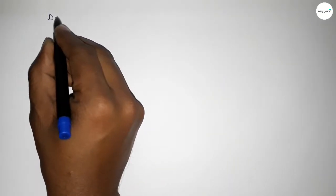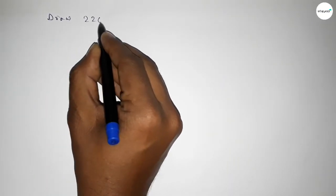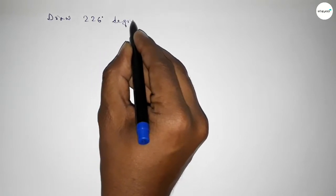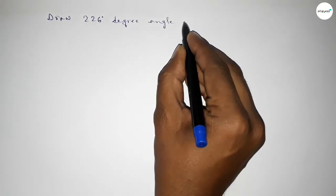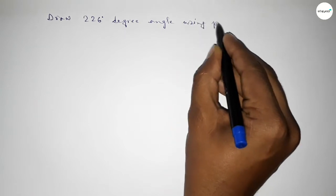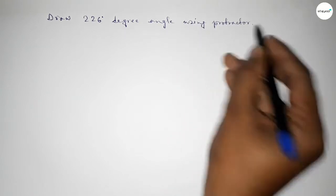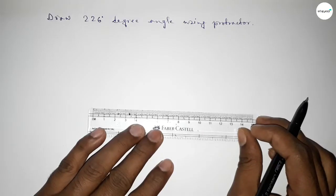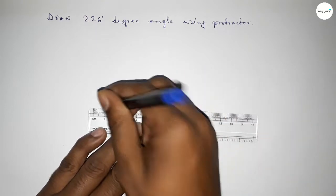Hi everyone, welcome to Size Chair Classes. Today in this video we have to draw a 226 degree angle using a protractor. So let's start the video. First of all, we have to draw here a straight line of any length.